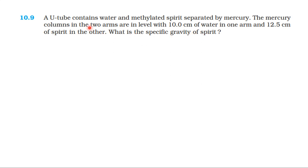So this is the U-tube with mercury. There are two arms. One arm has a 10 cm water column and the other has a 12.5 cm spirit column. In the two columns, mercury is at the same level. What is the specific gravity of the spirit?